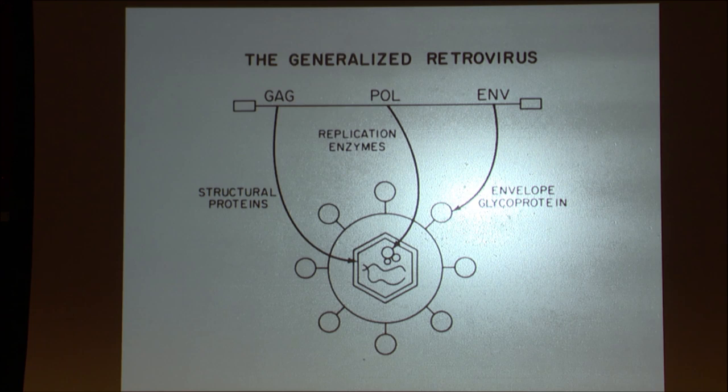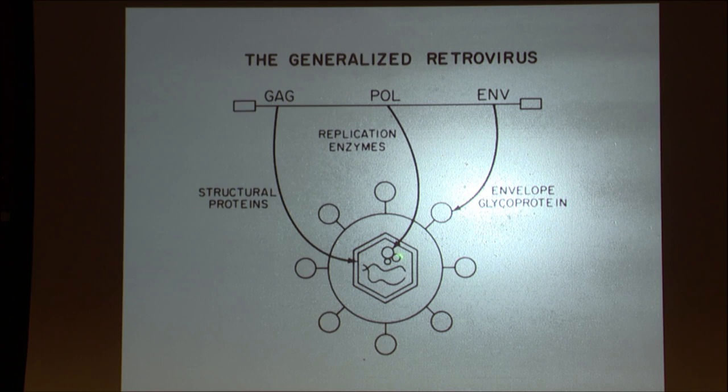The simple retroviruses have just three open reading frames: GAG, POL, and ENV. The GAG protein makes up the internal core shell. The POL gene encodes the replication enzymes, which are packaged inside along with it, needed for the early phase of infection. The envelope gene encodes the glycoprotein on the virion surface. These are the proteins that make up the virus particle.